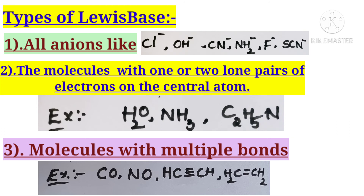Another type: molecules with one or more lone pairs of electrons on the central atom. For example, H2O, NH3, and pyridine (C5H5N). In water, the oxygen central atom contains two lone pairs. In ammonia, nitrogen contains one lone pair. In pyridine, the nitrogen also contains one lone pair. Any compound containing one or more lone pairs of electrons on the central atom acts as a Lewis base.